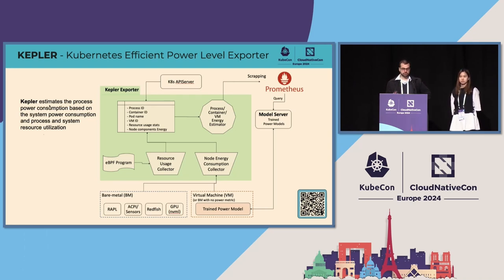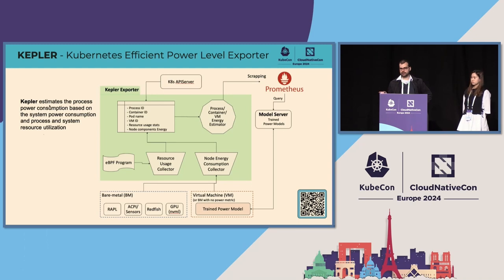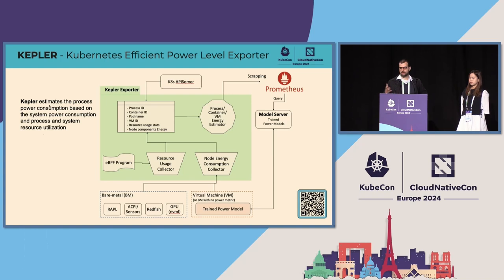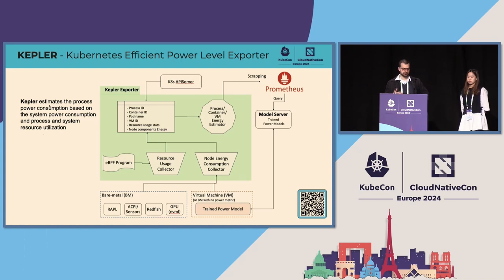To collect the resource utilization, we use BPF, which introduces low overhead to get the resource utilization for processes. For systems that have no access to hardware sensors showing the energy consumption of components — like virtual machines on public cloud — we use pre-trained power models. These are models trained by collecting energy consumption and resource utilization on specific bare metal nodes.